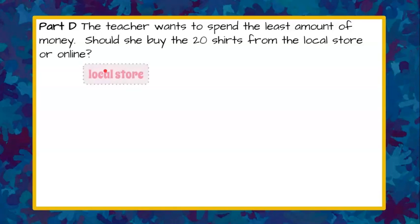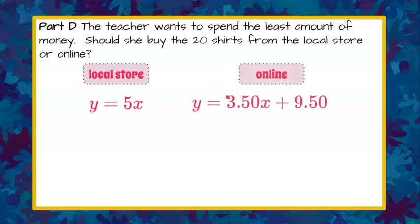Welcome back. We're going to go back to the local store. We wrote the equation y equals 5x to represent that from the graph we were given, so $5 per shirt. For online, we wrote the equation y equals $3.50 per shirt plus the $9.50 shipping fee. Now we're going to take our 20 shirts and plug those in for the values of x and see which one is the better deal.